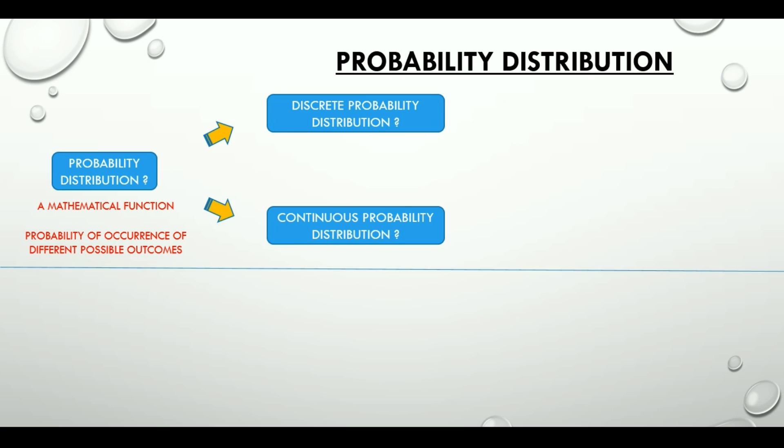You know what are discrete and continuous data from our first video on data types, right? A discrete probability distribution is one where the set of all possible outcomes is discrete. It is characterized by what we call a probability mass function. We will see in a while what exactly is that. In a continuous probability distribution, set of all possible outcomes is continuous and it is generated by having a probability density function.